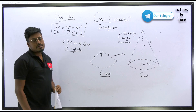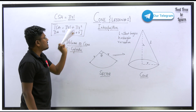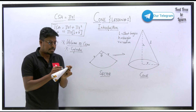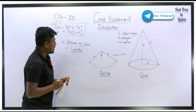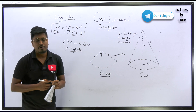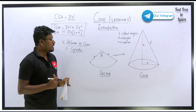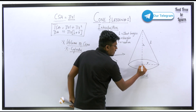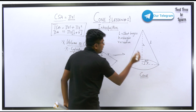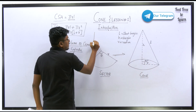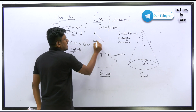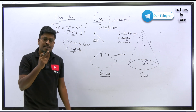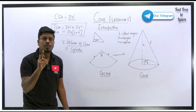So curved surface area = πrl, and total surface area = πrl + πr² = πr(l + r). These are the two key formulas for the cone so far. Now, before moving to volume, note that the angle between the height h and the radius r of a cone is 90 degrees. So a right-angle triangle is formed, and we can apply the Pythagoras theorem.